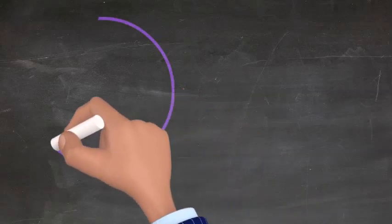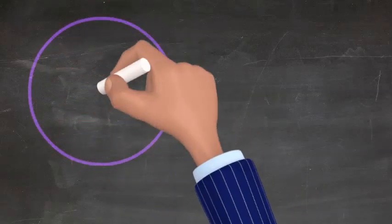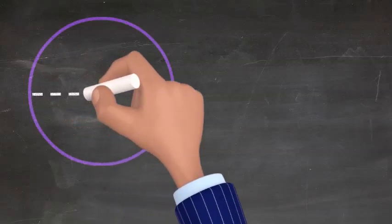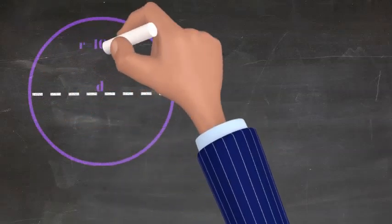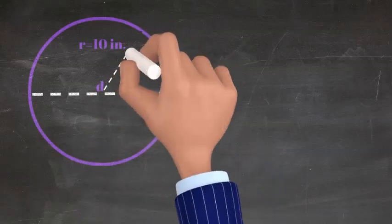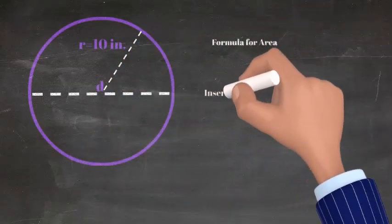To find the area of a circle you need to use the equation area equals pi times the radius squared. The radius is the distance from the center of a circle to any point in its circumference. Let's try a few problems together.